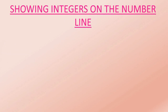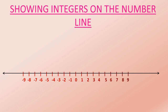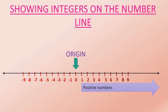Showing integers on the number line: The point on a number line which marks 0 is called the origin. On the left and right of 0, the points are marked at equal distance. The numbers shown by the points on the right are positive numbers and those shown by the points on the left are negative numbers.